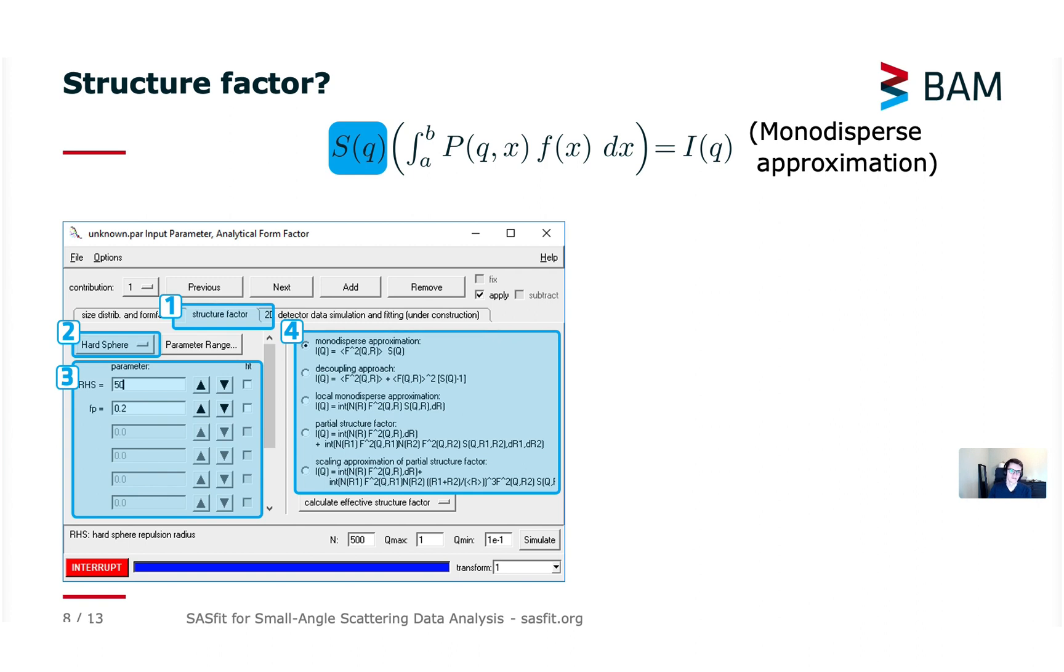For example the decoupling approach next to the squared and averaged form factor amplitude it requires also the non-squared averaged form factor which is not always implemented for every model. So then the formulas you see there's a form factor squared and averaged and also a form factor averaged and then squared. This non-squared form factor needs to be implemented in each model and if it's not available you will typically get an error message. Just to let you know there are some requirements connected with each method of structure factor incorporation.